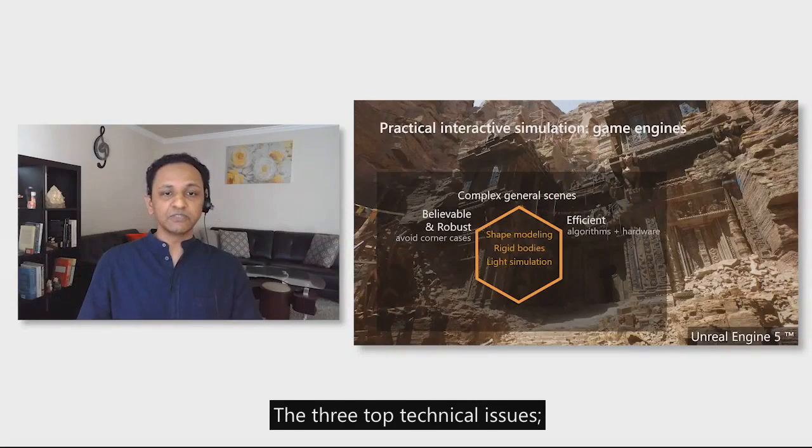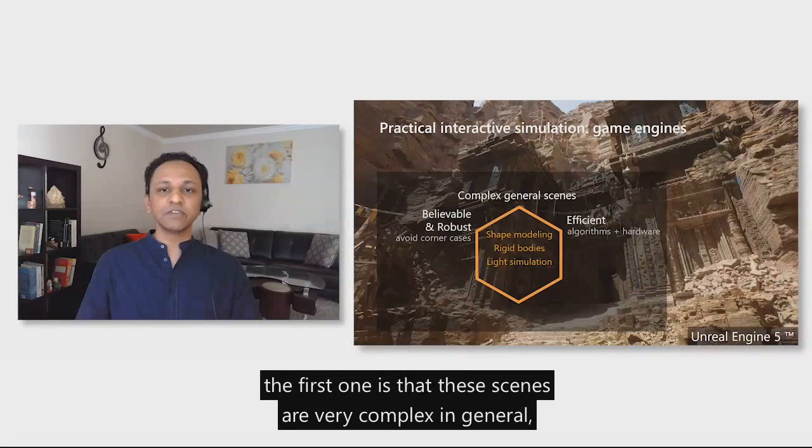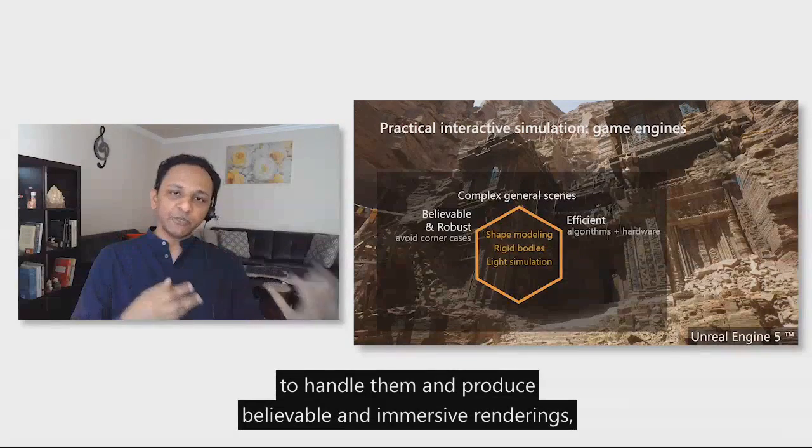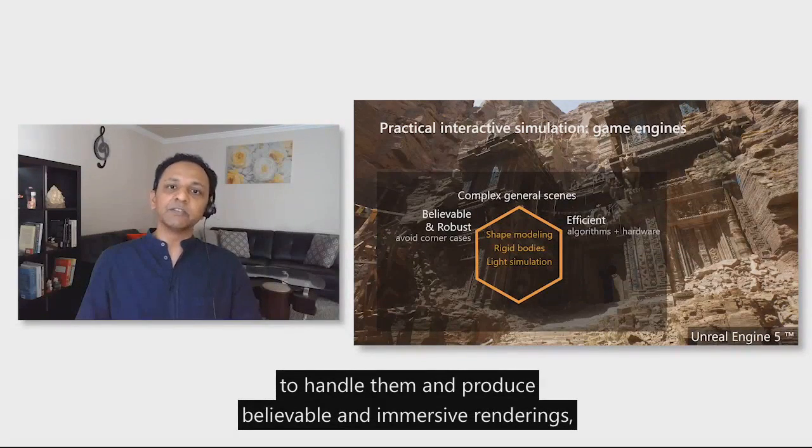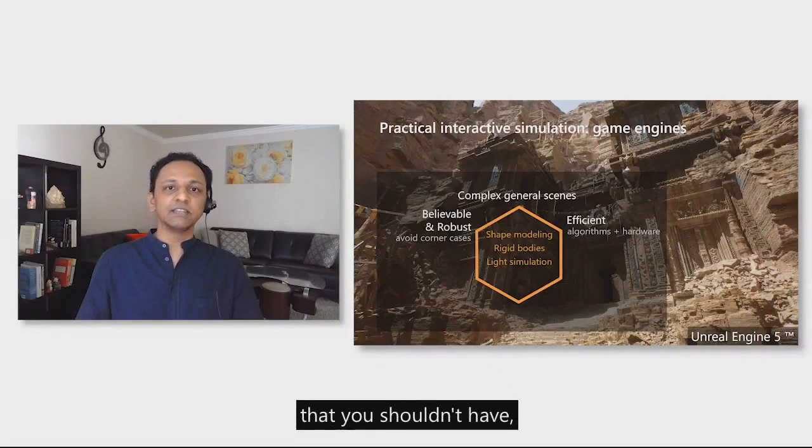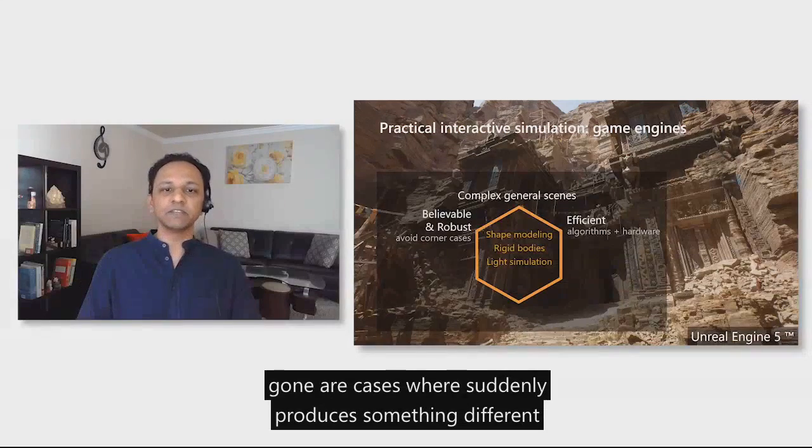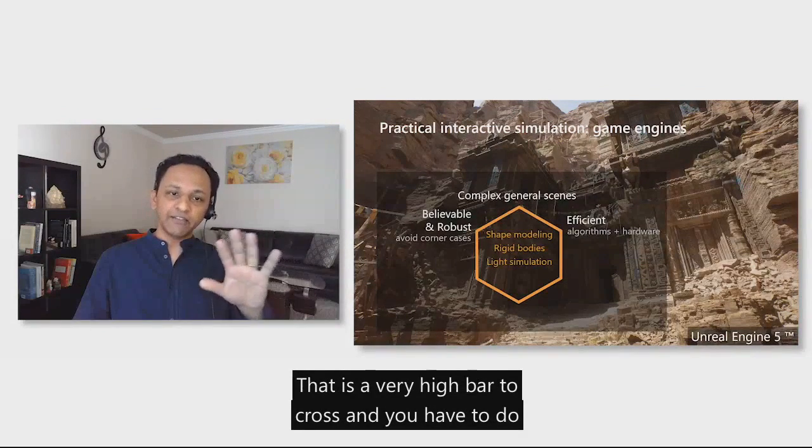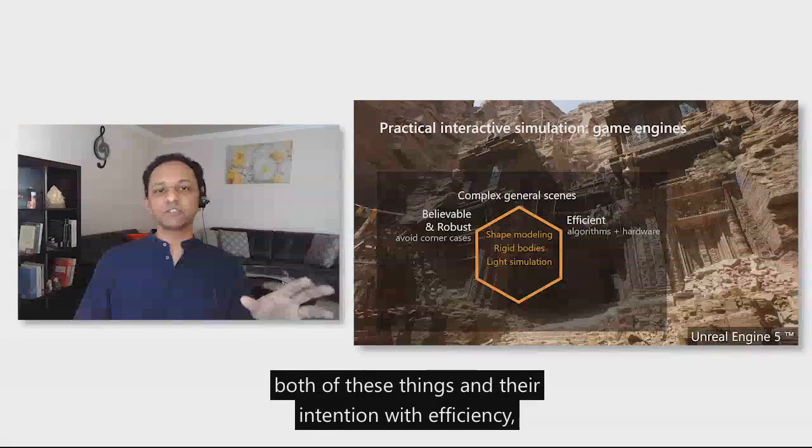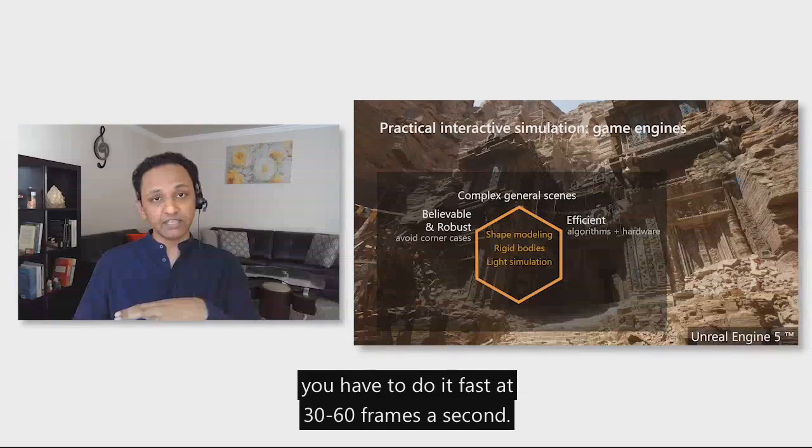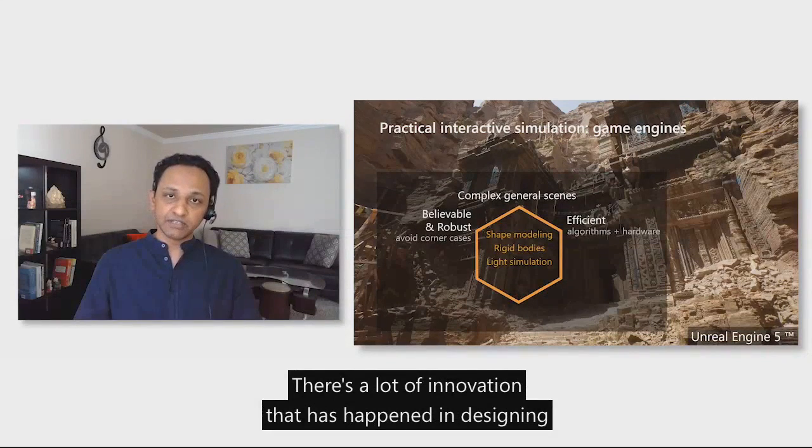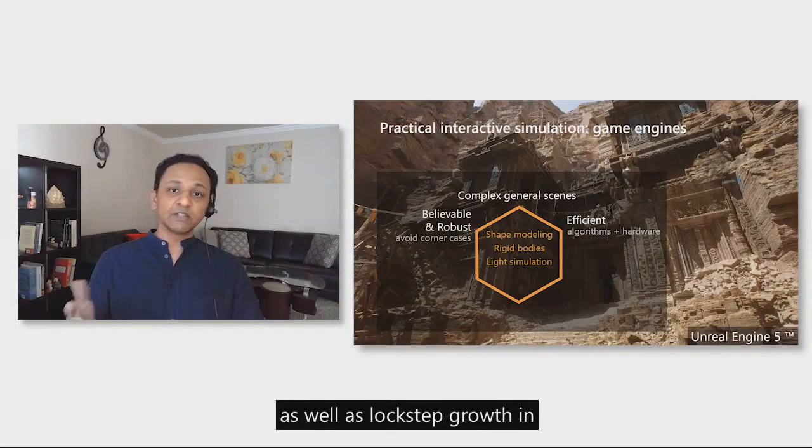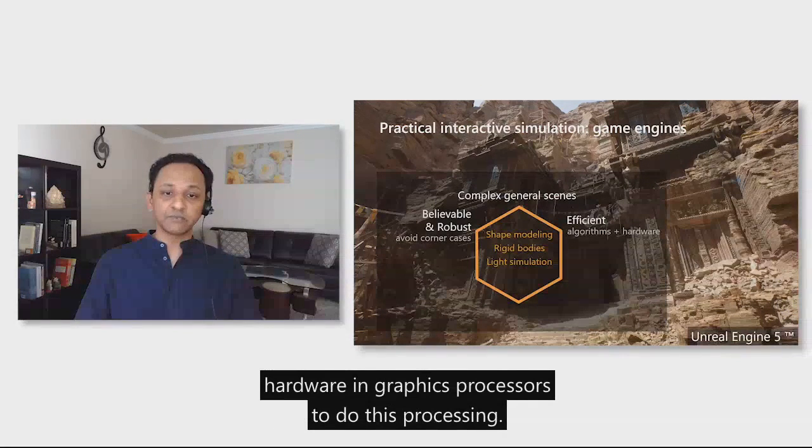Doing this in real-time is a huge challenge. The three top technical issues: first, these scenes are very complex in general, so any practical technique needs to handle very general scenes and produce believable and immersive renderings. Robustness is a very important concern that you shouldn't have corner cases where suddenly it produces something different and wrong because perception latches on to anything out of the ordinary. You have to do both of these things, and they're in tension with efficiency. You have to do it fast at 30 to 60 frames a second. There's a lot of innovation that has happened in designing efficient algorithms that do clever approximations with knowledge of the physical phenomena themselves, as well as lockstep growth in hardware in graphics processors.